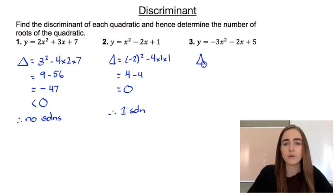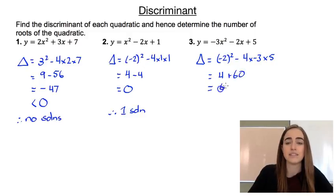And our final one, our discriminant would be that -2 squared minus 4 times -3 times 5, so b² minus 4ac. And that's going to give us 4 plus 60, which would give us 64. So because that's greater than zero, we're going to have two solutions.